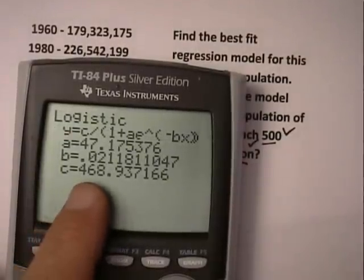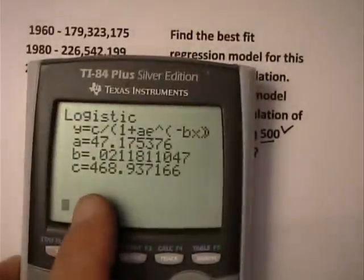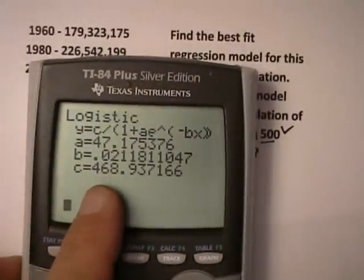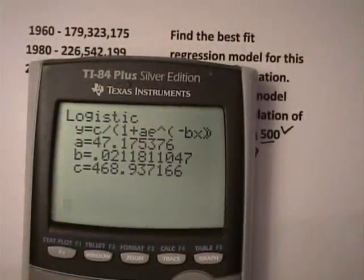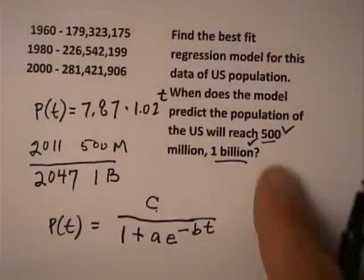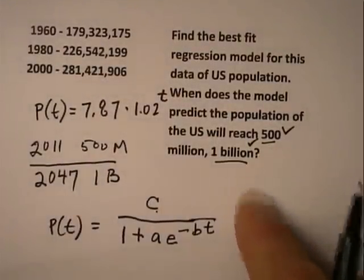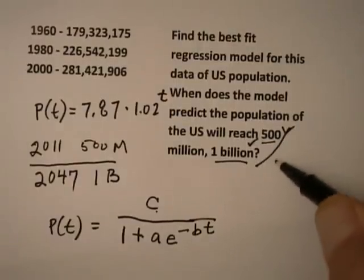Well, you know what? Turns out that C represents the upper limit. Okay? It's called the carrying capacity, and it's in the model 468. So it's obvious, based on the actual algebra and the parameter values, that we're not going to reach 500 and a million. So the answer to these is, it doesn't happen. It doesn't happen. We never reach that far.